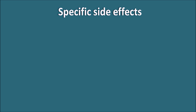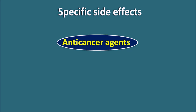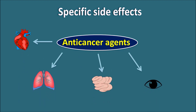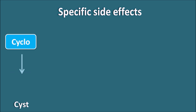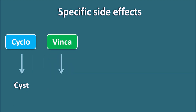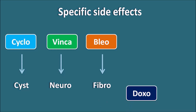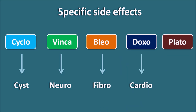Now let us go with the specific side effects of anti-cancer agents. Anti-cancer agents can produce specific tissue toxicity by acting on different organs — the heart, lungs, GI epithelium, eye, and bladder — leading to tissue-specific toxicity. We can remember these specific side effects using a small mnemonic: cyclo produces cys, vinca produces neuro, bleo is for fibro, doxo is for cardio, and plato is for otto.